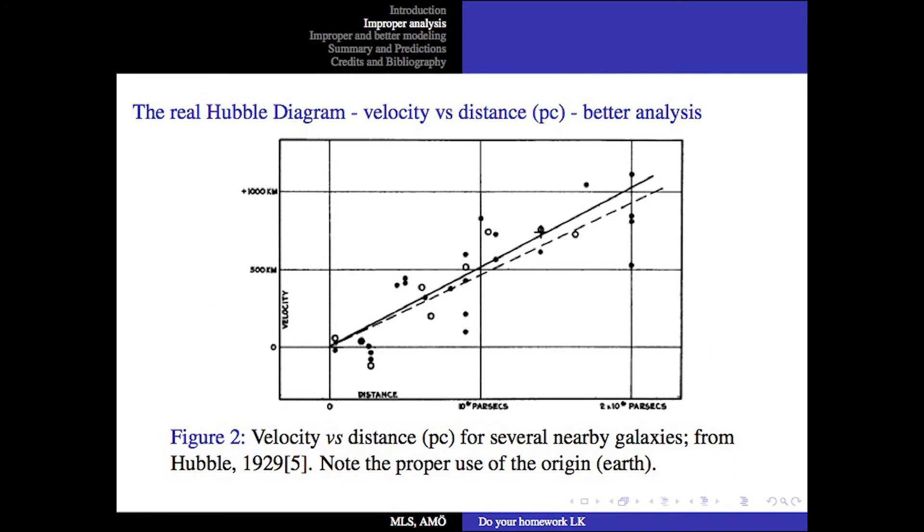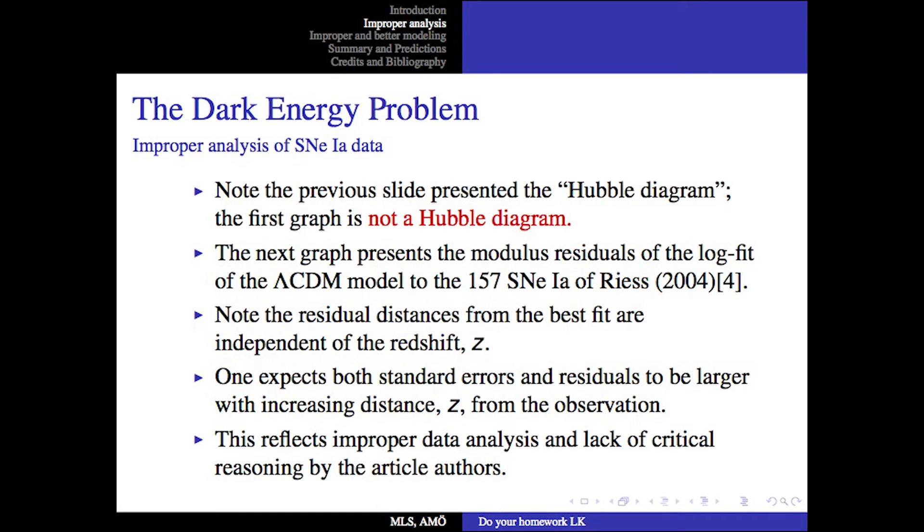This is an actual real Hubble diagram. Notice that Hubble plotted the velocity versus the distance. This is a proper Hubble diagram. The previous plot was not a Hubble diagram, even though very often astrophysicists refer to that as a Hubble diagram. That's not true. The previous slide presented a Hubble diagram. The first diagram is not a Hubble diagram.